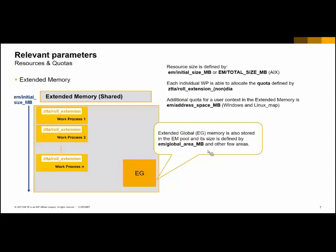The amount of data involved in this area is smaller. Normally this should be set between 5 and 10 percent of the whole extended memory pool, because only administration data belonging to internal communication between SAP kernel components is stored here. The extended global memory is part of the extended memory, normally set to 5 or 10 percent of the whole extended memory pool. Only the administration data belonging to internal communication between SAP kernel components is stored in this global area.